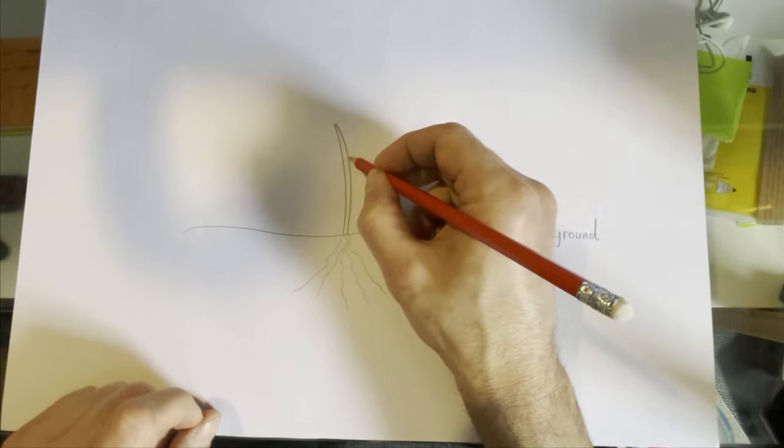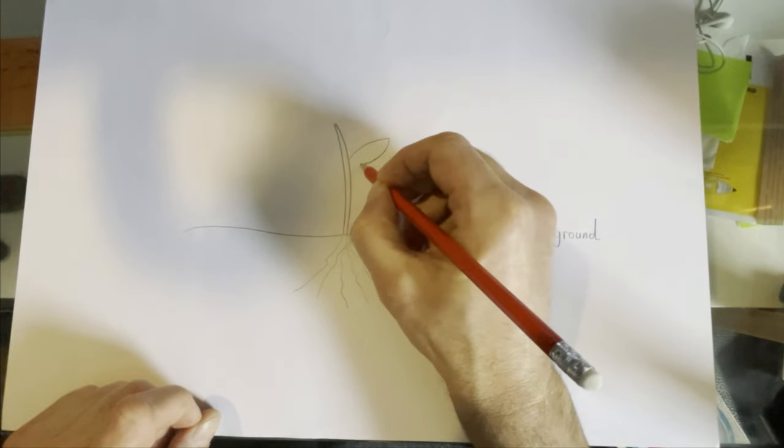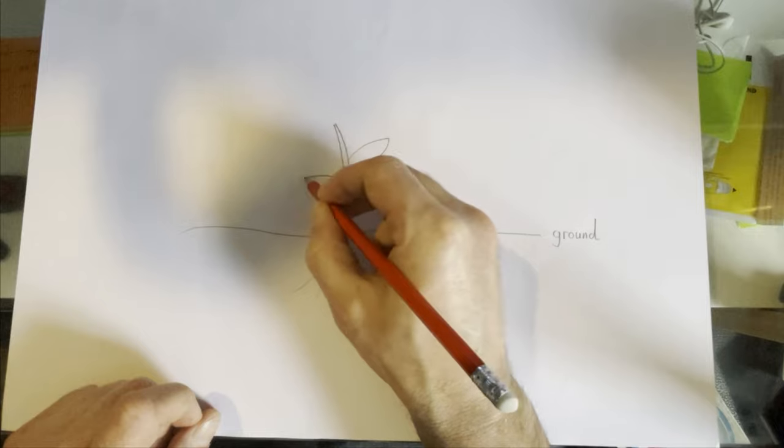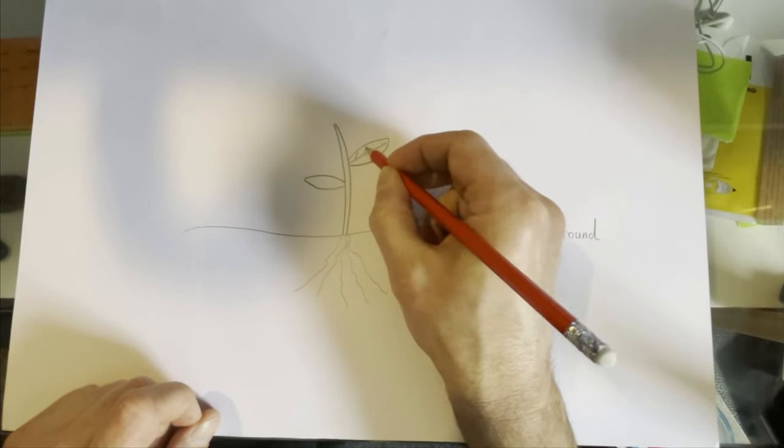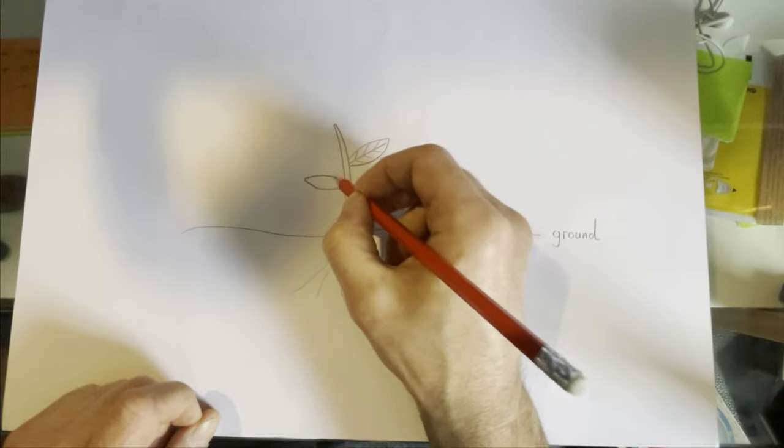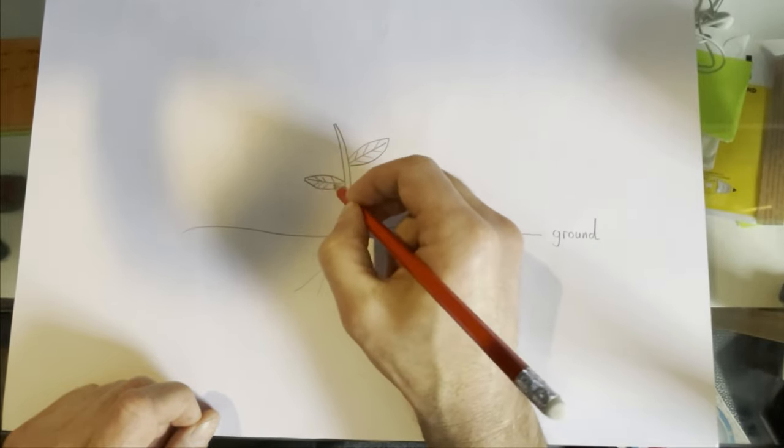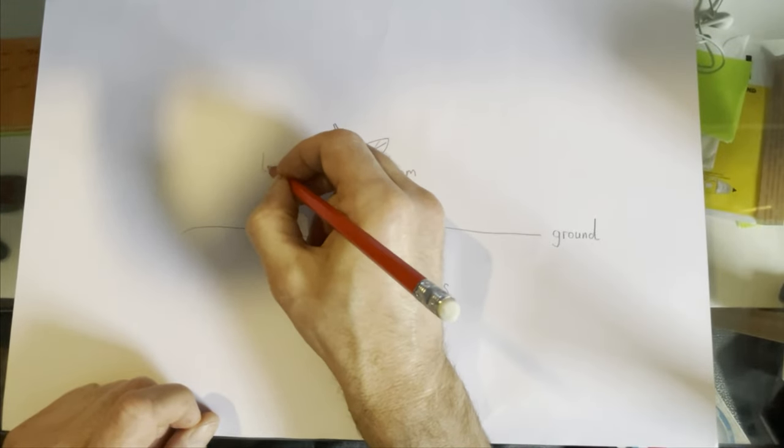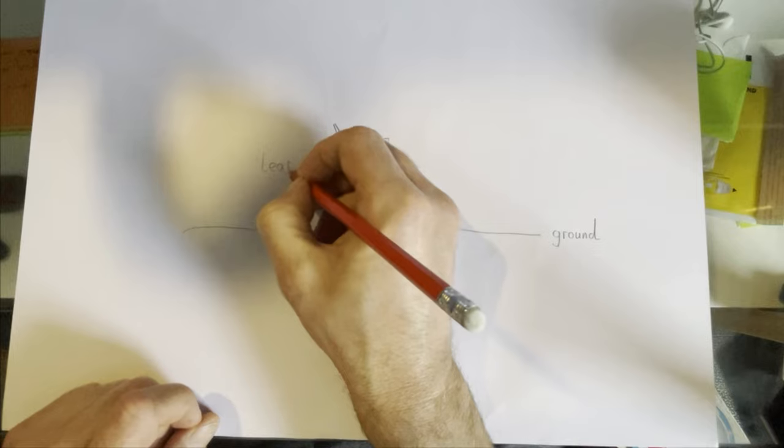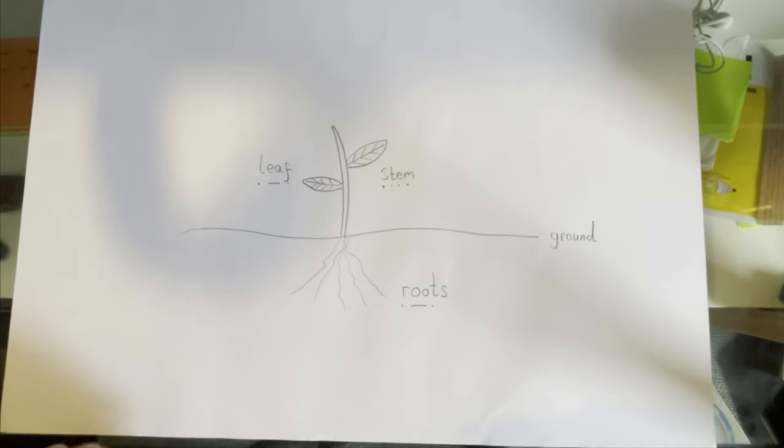And off the stem, we often see, you'll know what these are. It's a l-e-a-f. Leaf. One leaf, lots of leaves.